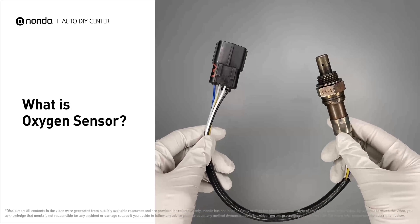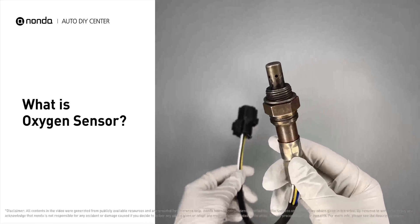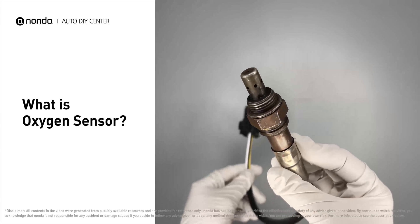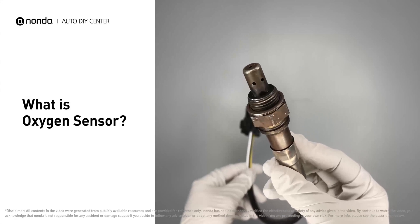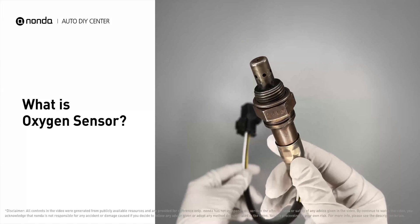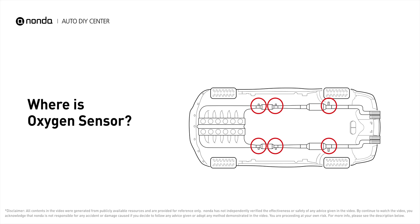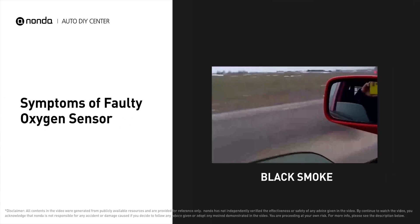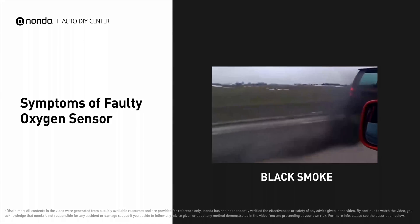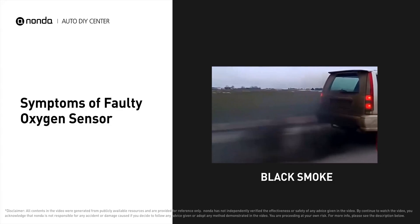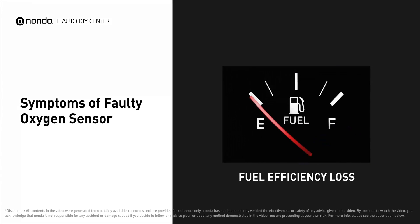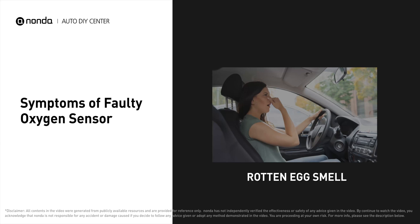Oxygen sensors, also known as O2 sensors, help determine whether the air-fuel ratio of a combustion engine is rich or lean in real time. Oxygen sensors are located before and after the catalytic converter. A faulty oxygen sensor may cause black smoke to come out from the exhaust. You can notice fuel efficiency loss and smell a rotten egg smell.